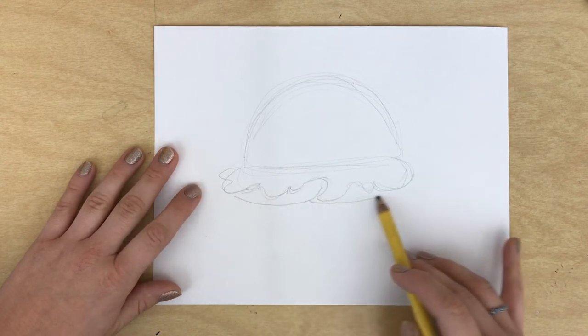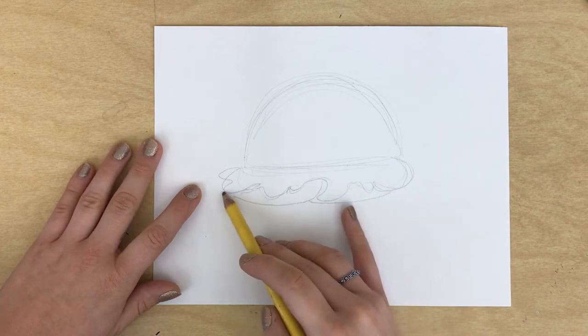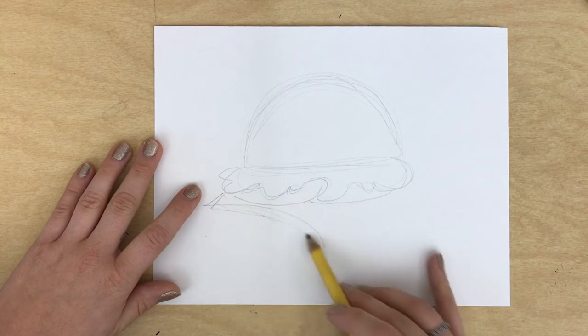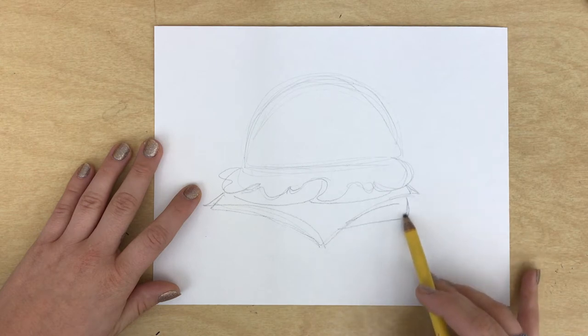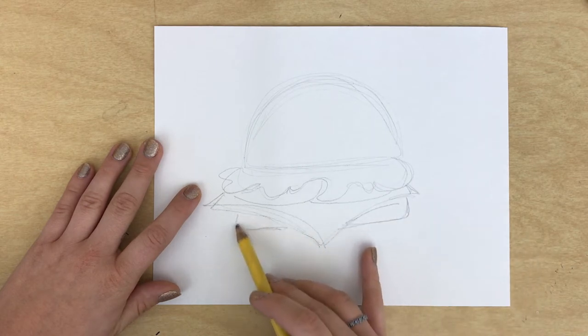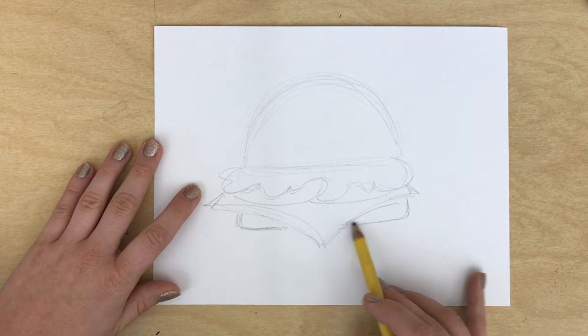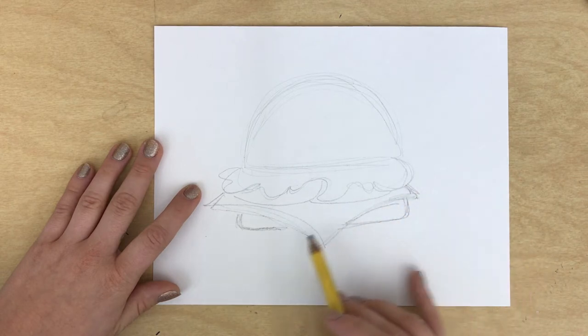I'm choosing a cheeseburger and I'm making my shapes really big which this will help you in the long run when you start collaging those magazine pieces in because little tiny bits like tiny details are gonna be really difficult and frustrating with this project. So make your shapes really big.